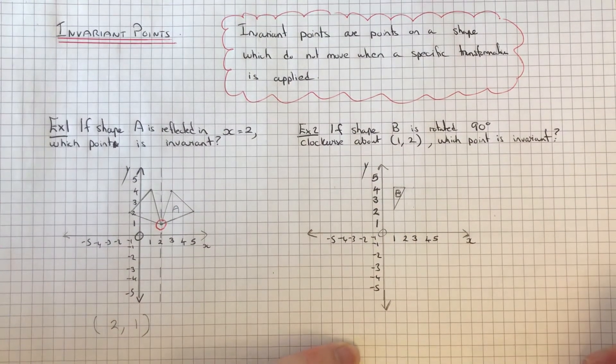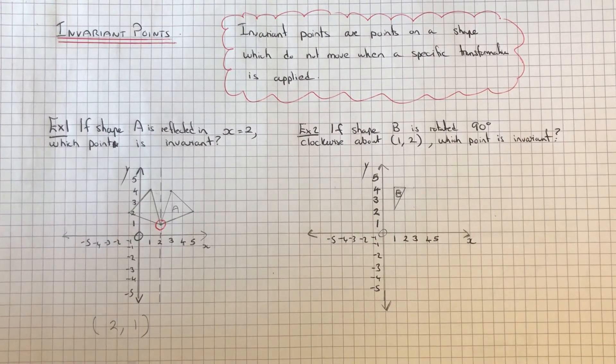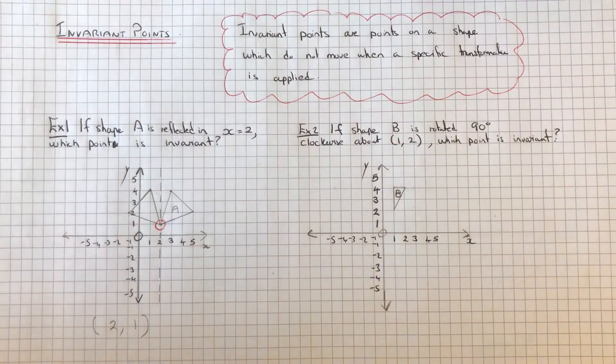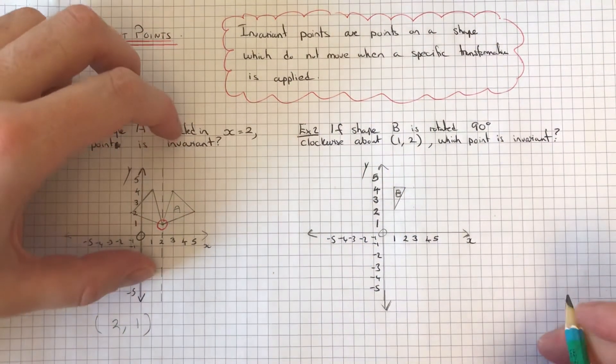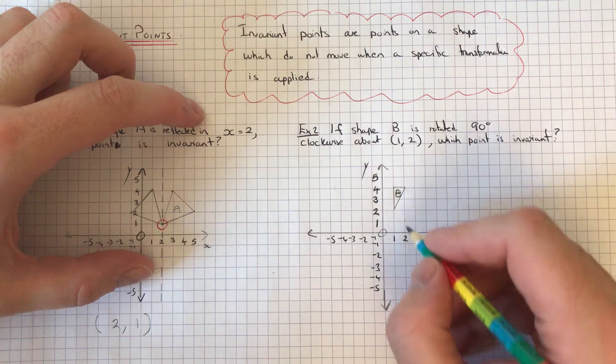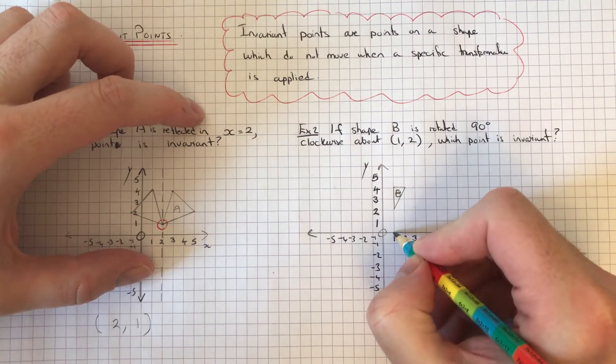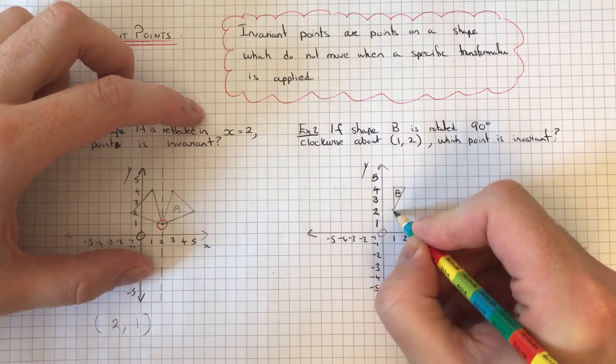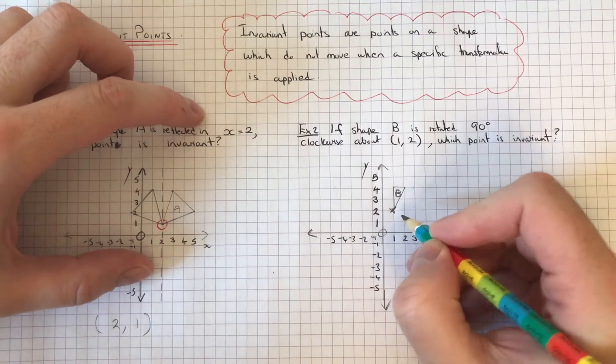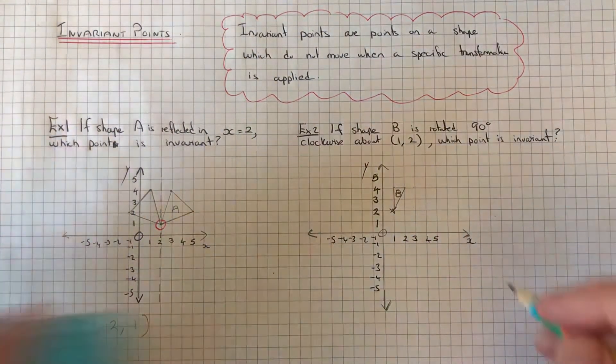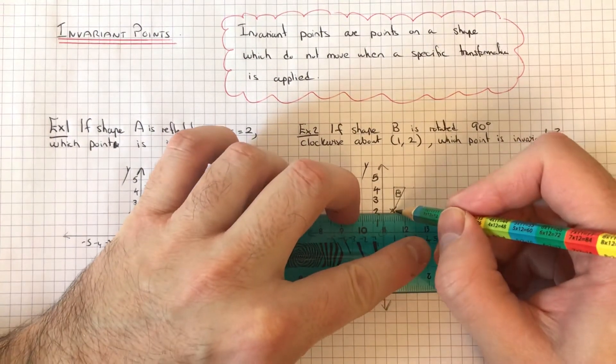90 degrees clockwise about the point (1, 2). Which point is invariant? We've got to do a rotation 90 degrees clockwise, and the point is (1, 2), so that's there. Again, let's just rotate our shape. If